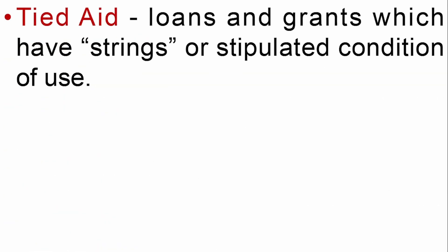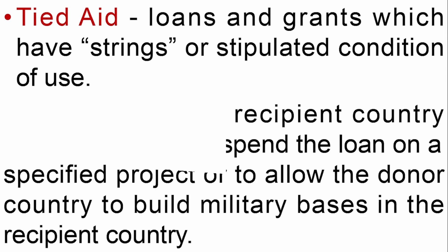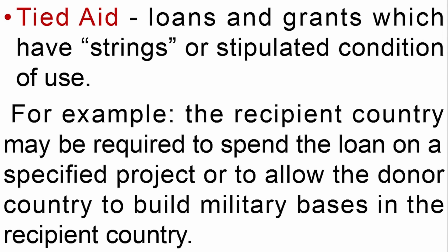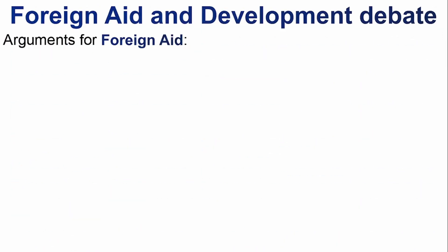The third form of aid is tied aid. Tied aid can be a loan or a grant, but it comes with strings or conditions attached. For example, the recipient country may be required to spend the loan on a specified project, or they may have to allow the donor country to build a military base in their country. Other conditions may involve giving land or other concessions.